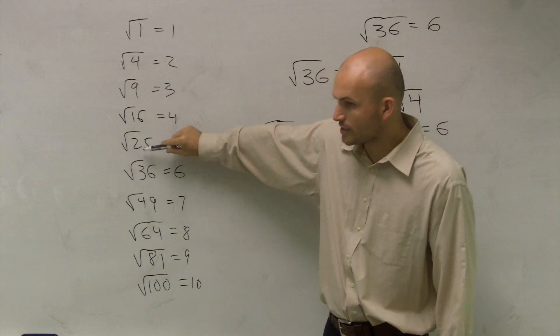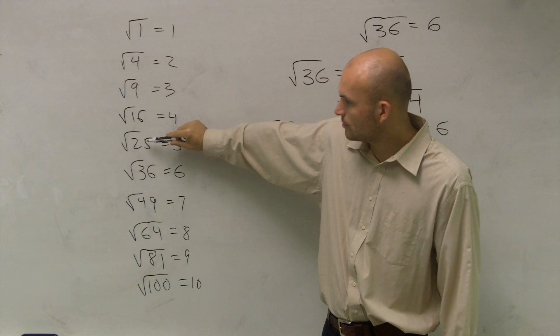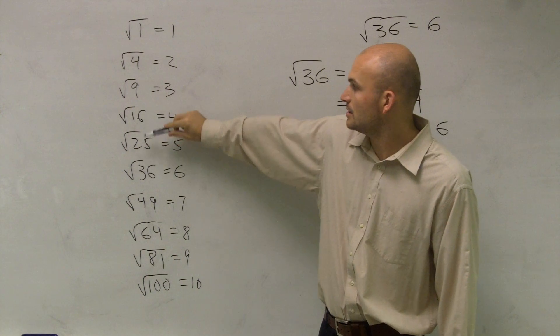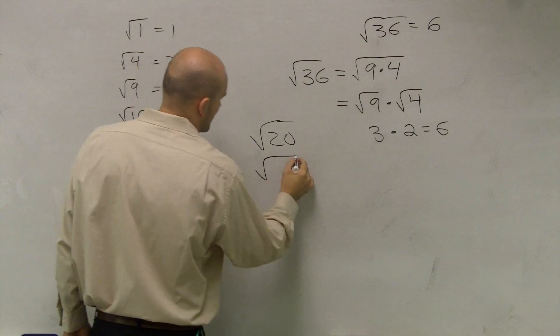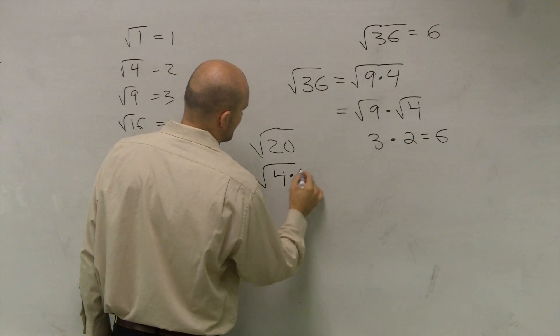Hey, look. Well, I'm sorry. Remember, here's your square numbers. So the largest square is going to be 4. So I can rewrite 20 as the square root of 4 times 5.